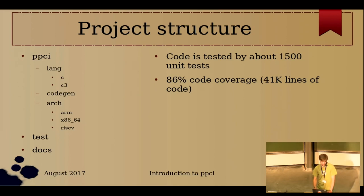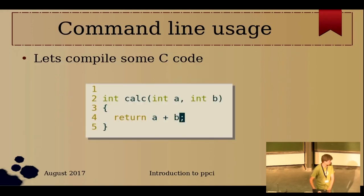A little about the project structure: it's a usual Python project. There's a language directory containing language front-ends, a codegen directory containing specific algorithms, an architecture directory containing descriptions for several architectures, plus test and documentation directories.